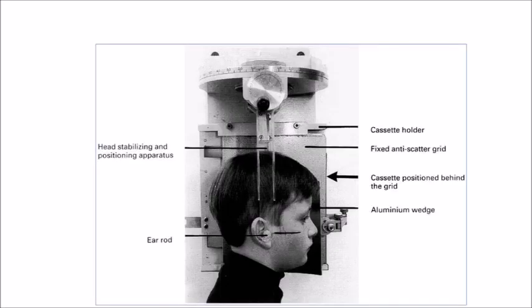This image shows a cephalostat machine, used for cephalometric radiography, where we have an ear rod for patient stabilization and another head stabilizing and positioning apparatus, with a cassette positioned behind the grid and a cassette holder. This gives a lateral view of the patient.